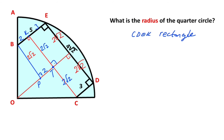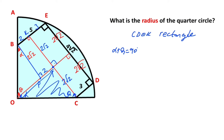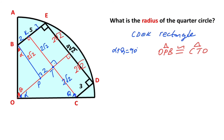Let's call this angle alpha and this angle theta. We know that alpha plus theta equals 90 degrees, so this angle must equal alpha and this angle must equal theta. Notice that these three triangles have the same angles — that means these two triangles are similar. So triangle OPB and triangle CTO are similar.